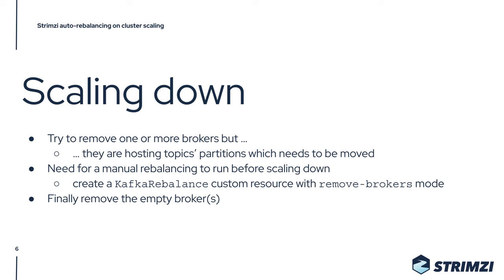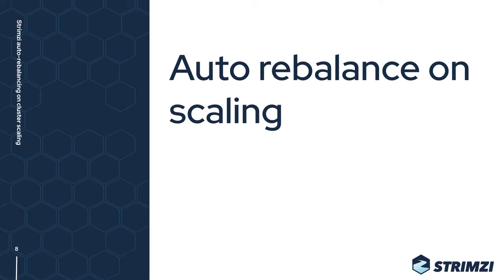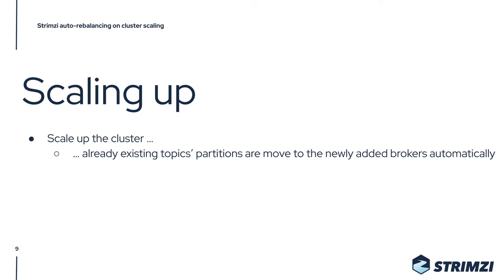As you can see, it's a two-phase manual process: either scale up and then run the rebalancing, or first run the rebalancing and then scale down. With the coming Streams release, we are going to add auto rebalancing on scaling. This means that if you are scaling up your cluster, you can just change the number of replicas of your Kafka node pool or Kafka custom resource, and after the scale-up the Streams operator will automatically run a rebalancing.